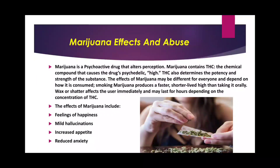Based on THC concentration, cannabis is classified into groups: bang, made from dried leaves, has about 1% THC; ganja, made from inflorescence or flowers, has around 1–2% THC; hashish or charas, made from resinous exudates of the plant, contains 8–14% THC; and hash oil has the highest concentration at 15–40% THC.